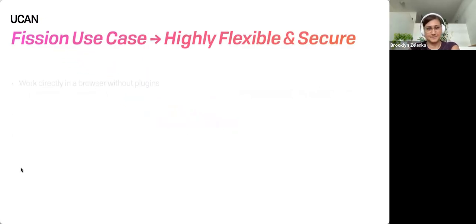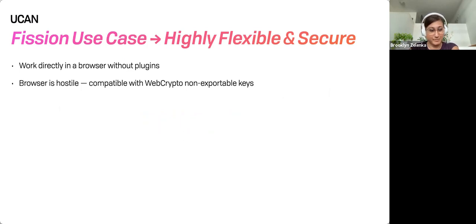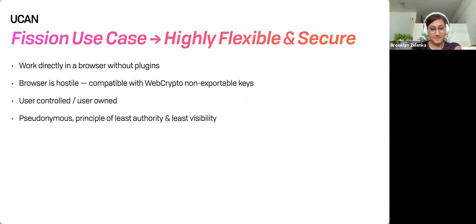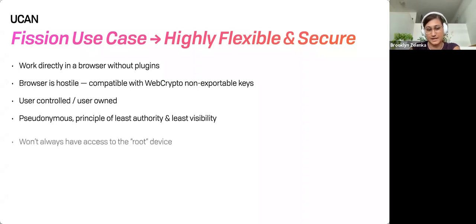So, UCANs. We've built them for our use case, which is to work directly in a browser without plugins. Browsers are a pretty scary place to run software, especially crypto. So we use non-exportable keys from the Web Crypto API, which means we can't transfer them between systems — it literally won't let us. So we have to have some way of linking these keys together. We need to be user-controlled, user-owned, and maintain as much security as possible — both privacy and secrecy.